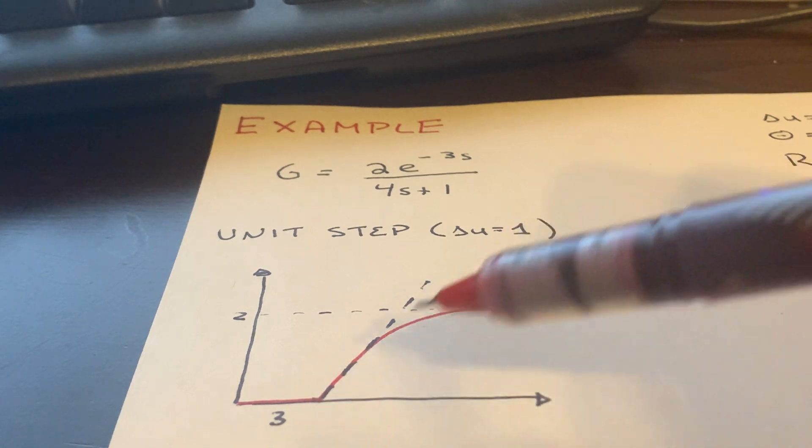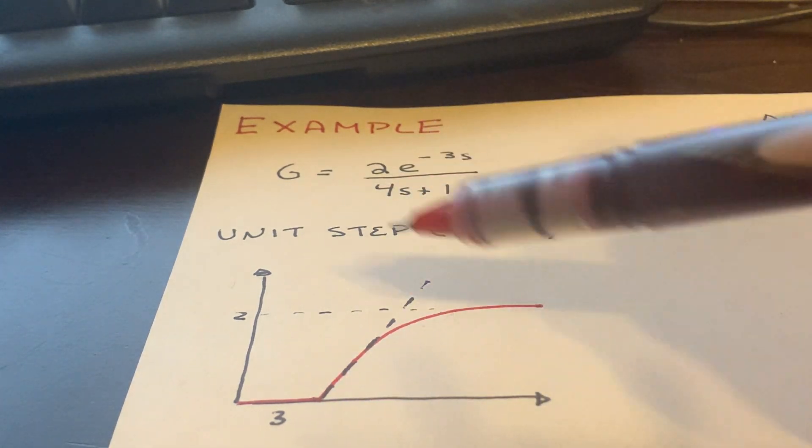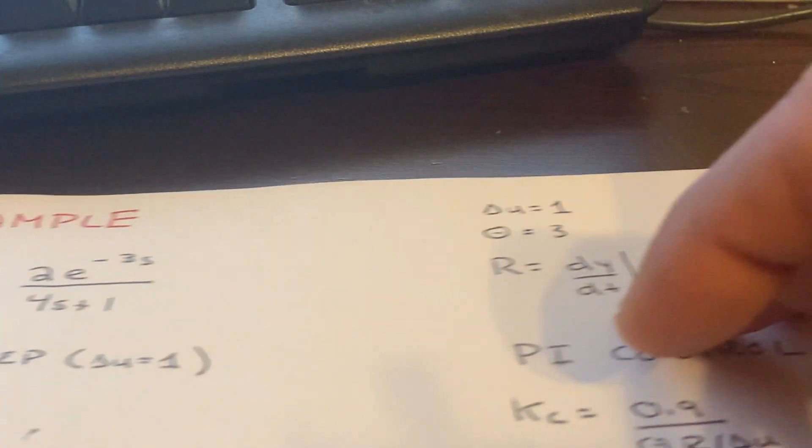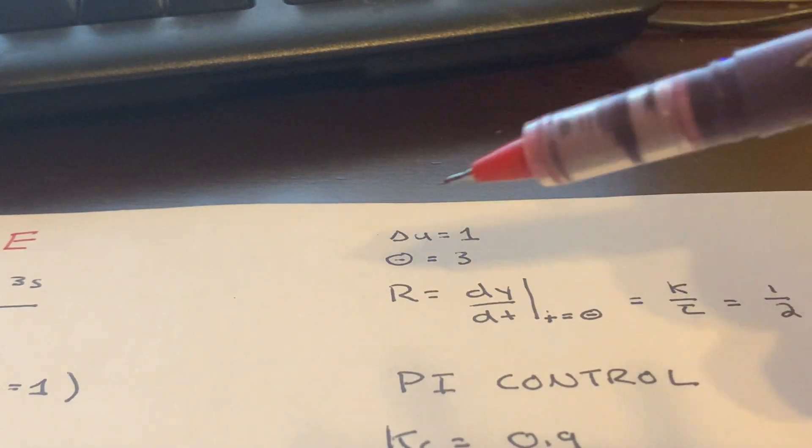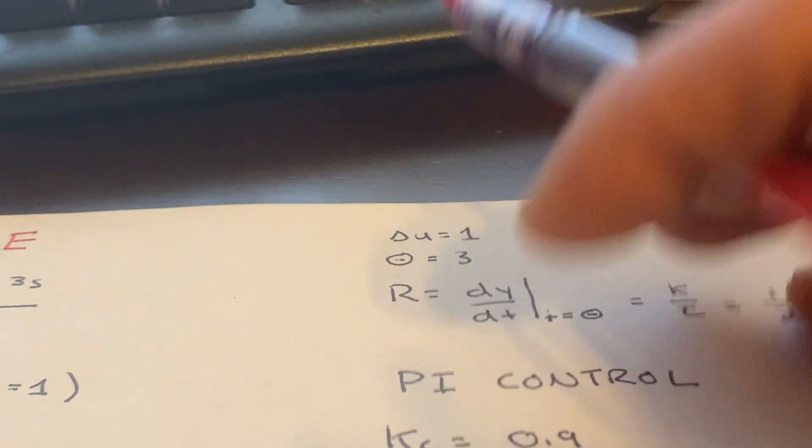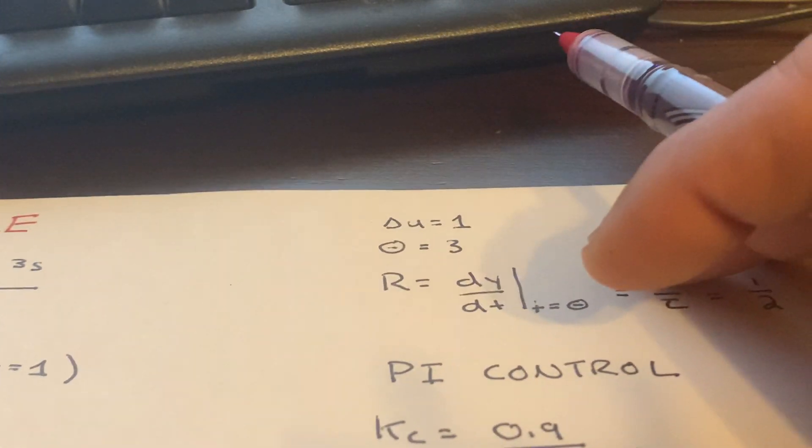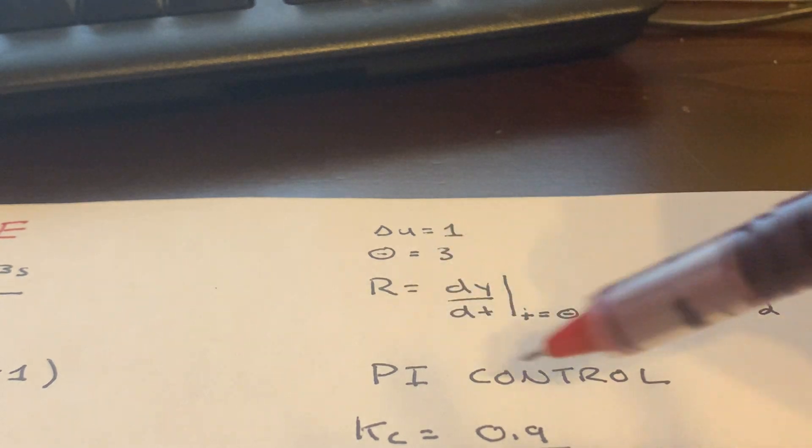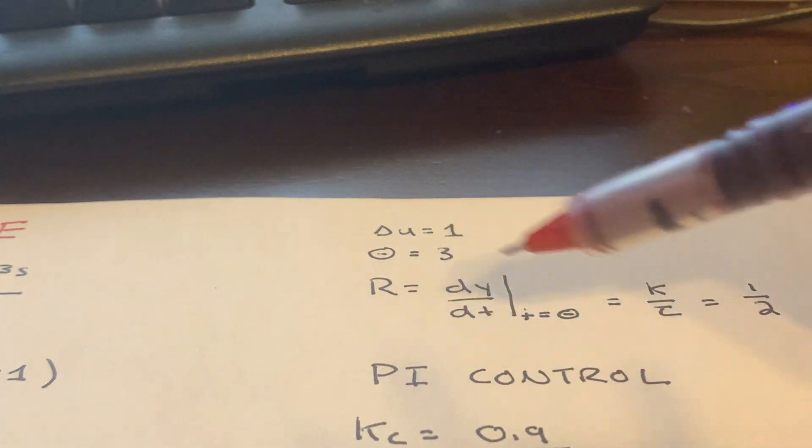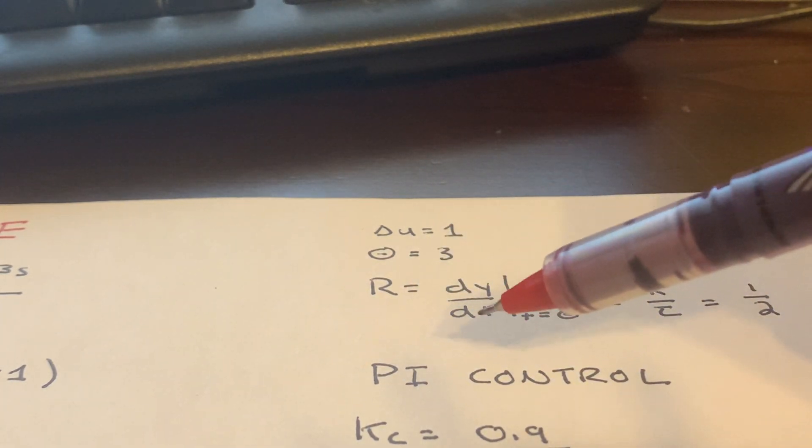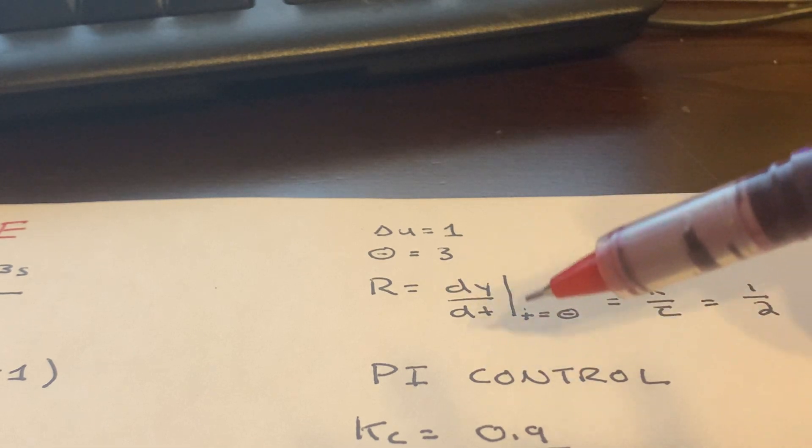Typically we get this from real data, but we can actually estimate it if we have the transfer function. Our delta u is 1. It's very clear that our delay is right over here, is 3. And then that r value, which is the slope, is just simply dy dt evaluated at t equals theta.